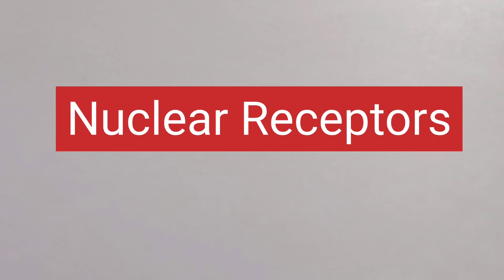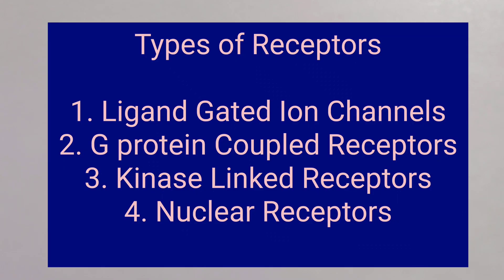In this video, I am going to talk about nuclear receptors. As mentioned earlier, the receptors are of four main types. These are ligand-gated ion channels, G-protein coupled receptors, kinase-linked receptors and nuclear receptors.